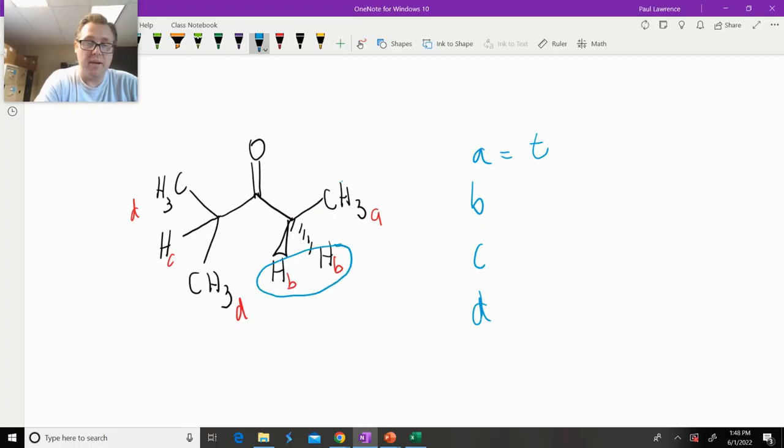Now, what is the splitting pattern for B? Well, B is attached to this carbon, so we have to go to the adjacent carbons. That's adjacent, but there's no hydrogens. So that's a zero. That's an adjacent carbon. How many hydrogens are attached? Three. So zero plus three equals plus,